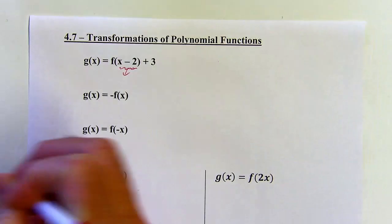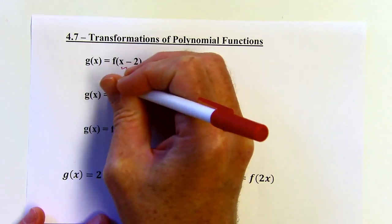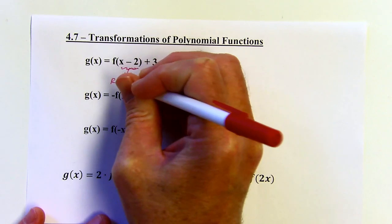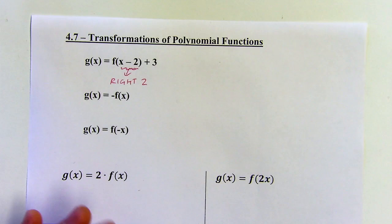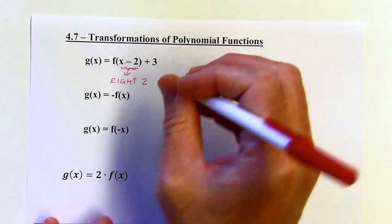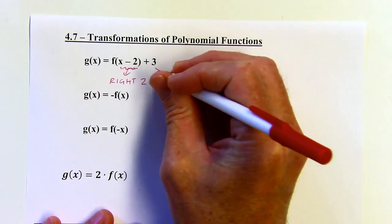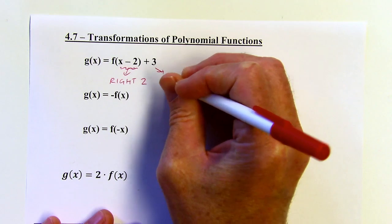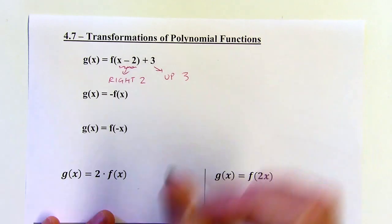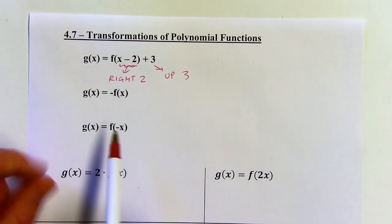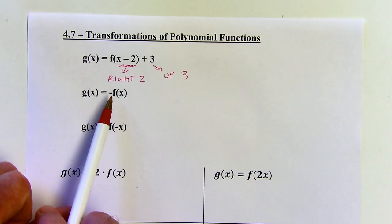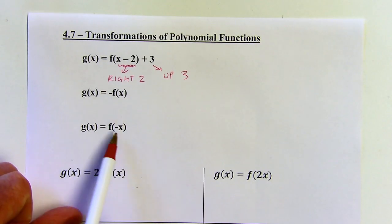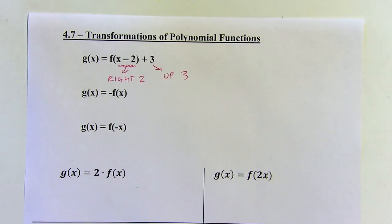So when we get something like this, it's going to shift everything to the right 2 units — that's a translation, 2 units to the right — where this is going to shift everything up 3. When we've got a negative either in front of the function or multiplying the input of the function, then that's going to be a reflection of some sort.